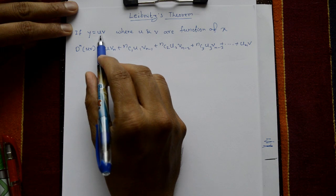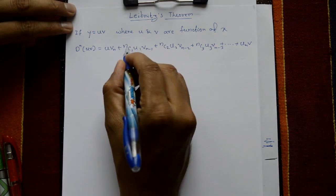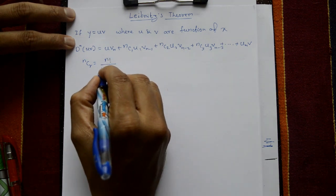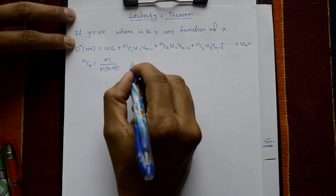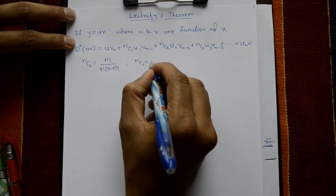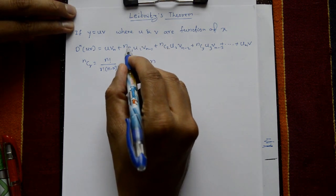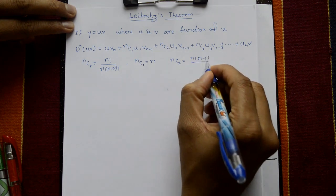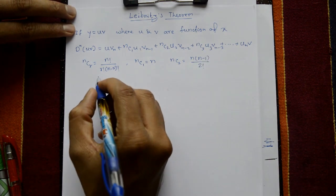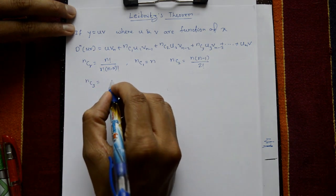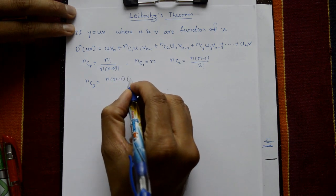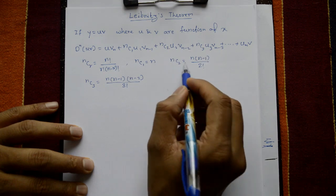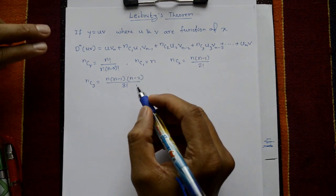Here u is a polynomial of x. The combination formula nCr equals n factorial divided by r factorial into (n minus r) factorial. So nC1 equals n, nC2 equals n(n-1) divided by 2 factorial, and nC3 equals n(n-1)(n-2) divided by 3 factorial. In most problems we only use nC1 and nC2 — the third term is not usually necessary.